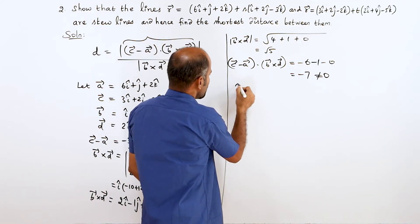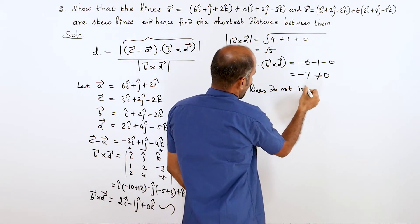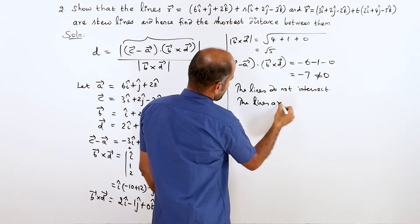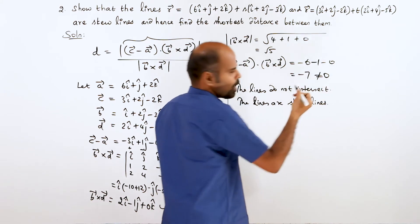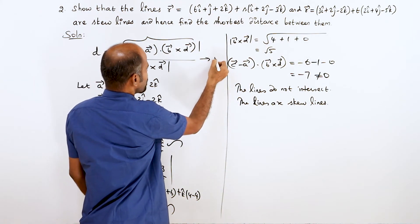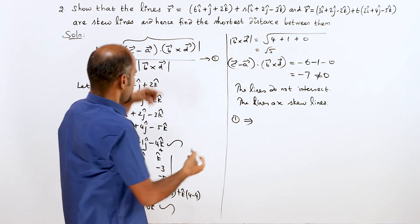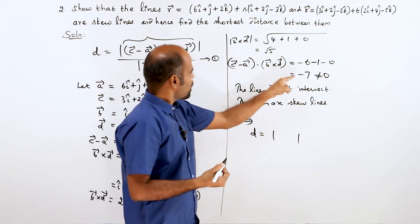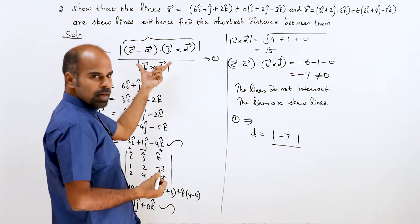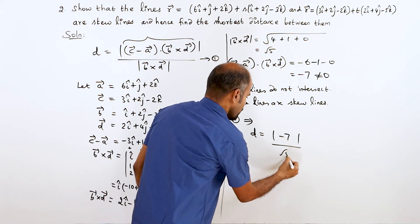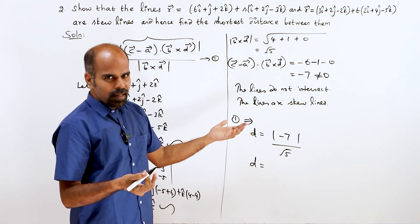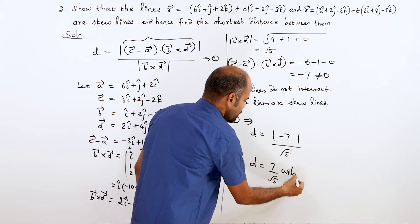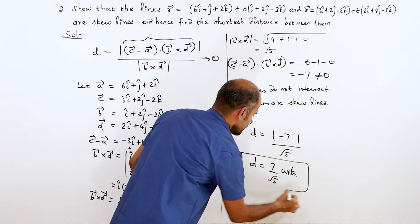Since the numerator is minus 7 (not zero), the lines do not intersect, so the lines are skew lines. The shortest distance d equals the modulus of c vector minus a vector dot b vector cross d vector, divided by the modulus of b vector cross d vector, equal to modulus of minus 7 divided by root 5, which equals 7 by root 5 units. This is the shortest distance between the two skew lines.